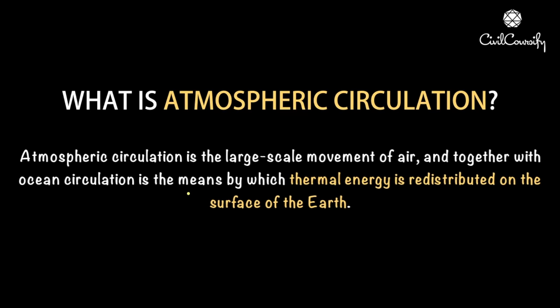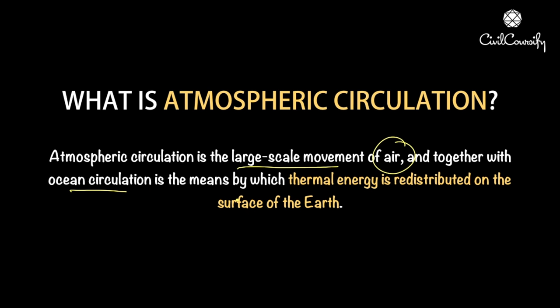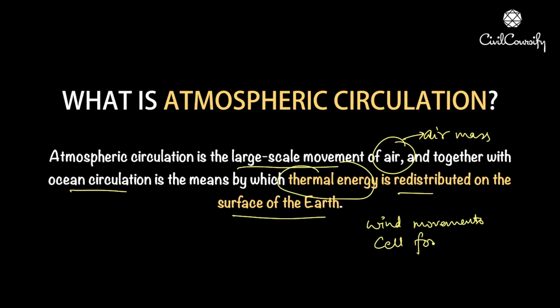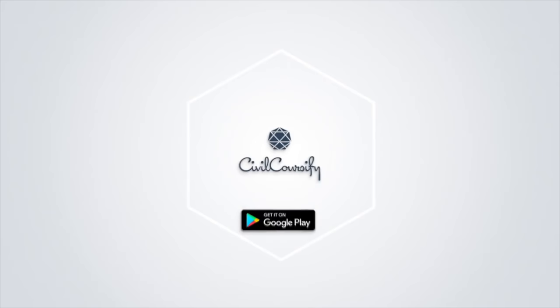Hello everyone. In this video we are going to discuss atmospheric circulation. Atmospheric circulation is the large-scale movement of air and, together with ocean circulation, is the means by which thermal energy is redistributed on the surface of the earth. This entire concept talks about the movement of air mass, and by the end of the video you will be able to understand wind movements and cell formation.